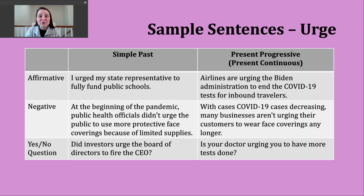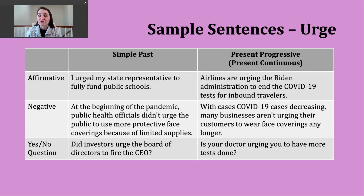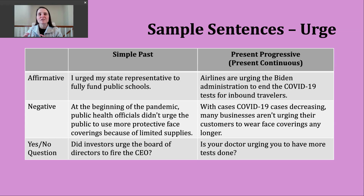Finally, let's look at making a yes or no question in the present progressive. To do this, we're going to start with our form of be — am, is, or are — whichever one matches our subject, and the subject comes next. Then we're going to use the -ing form of the verb. Here's another example: is your doctor urging you to have more tests done? This might be more like professional advice, recommendations, where the doctor is really advocating as well — it's a good idea to have some sort of follow-up test.